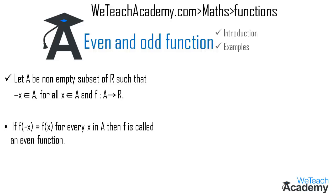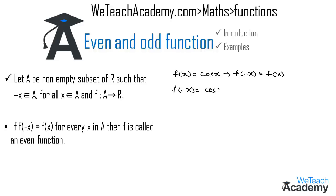Let me explain this concept with an example. Consider f(x) = cos x. For it to be an even function, it must satisfy the condition f(−x) = f(x). We find f(−x) by replacing x with −x, giving us f(−x) = cos(−x).